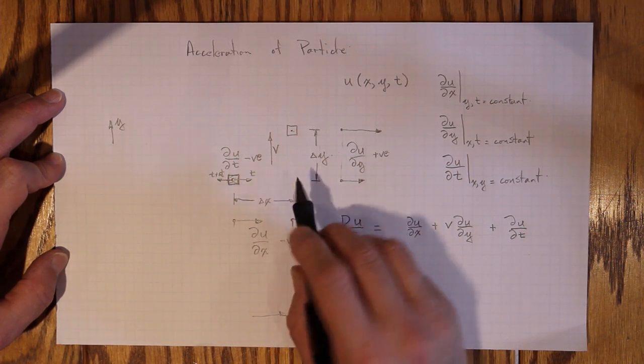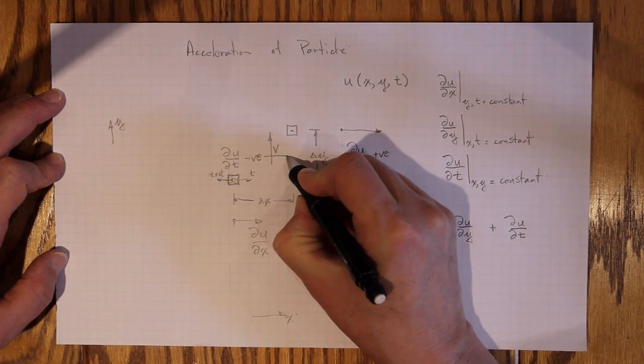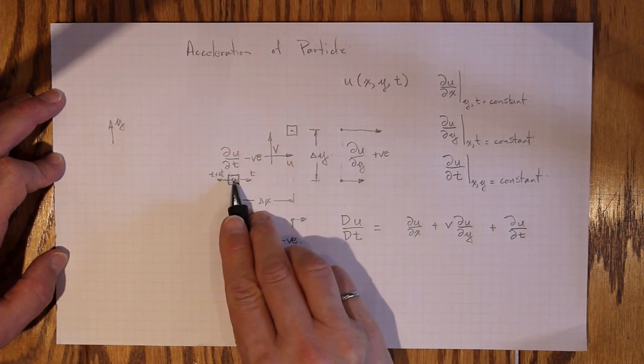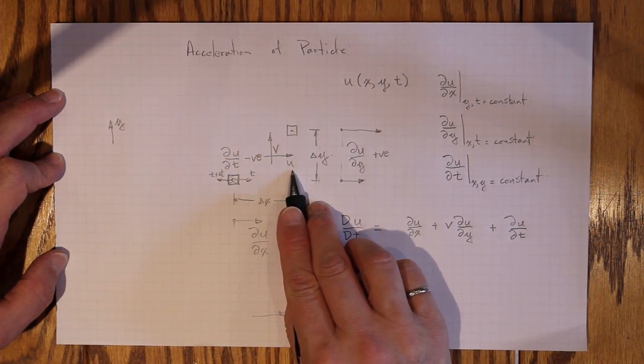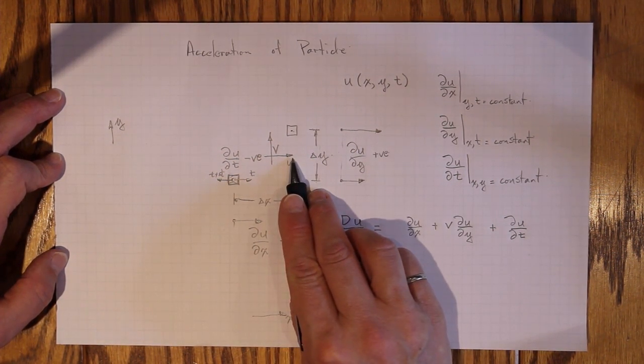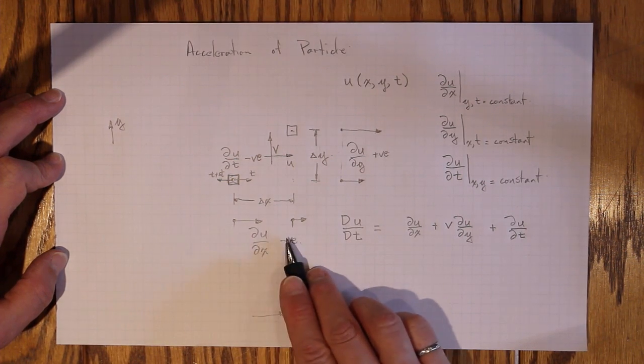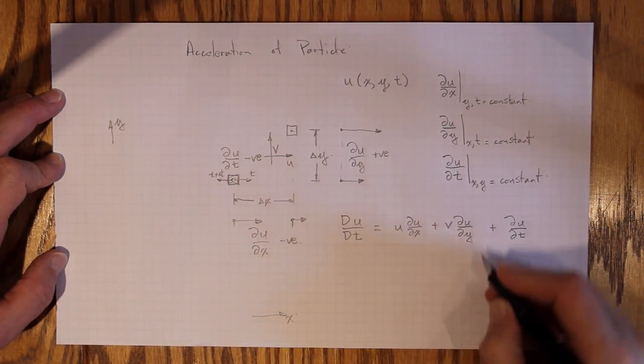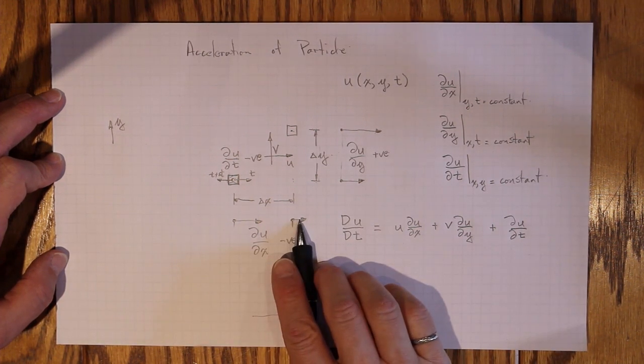So it's moving this way at a velocity u because it moved from here to here. Positive x. U is positive. U times ∂u/∂x gives us the amount it changed because it moved in the x direction.